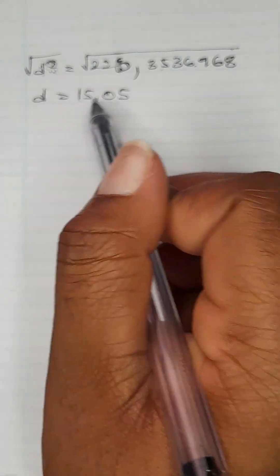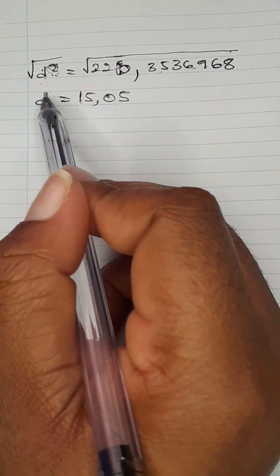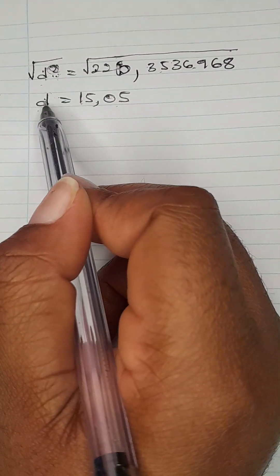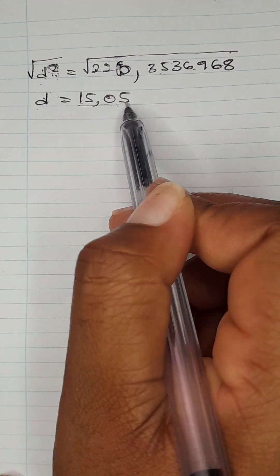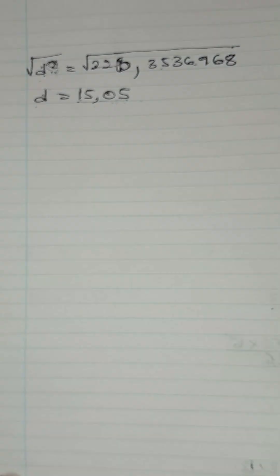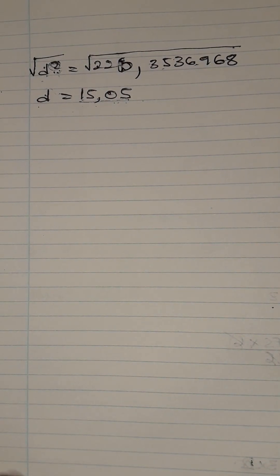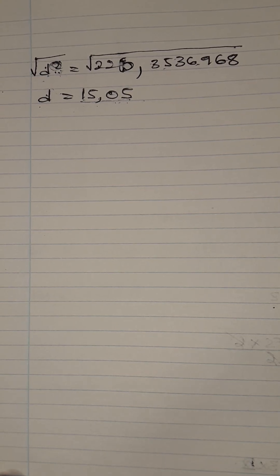So your answer for the diameter is 15.05mm. We made D the subject of the formula and the answer is 15.05. Thank you for watching this video; I will see you in the next video — make sure you like and subscribe. I love you guys, bye bye.